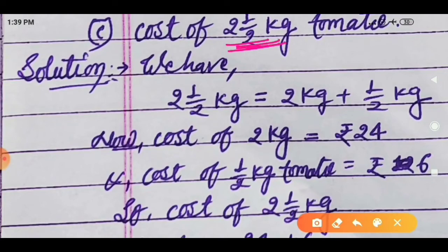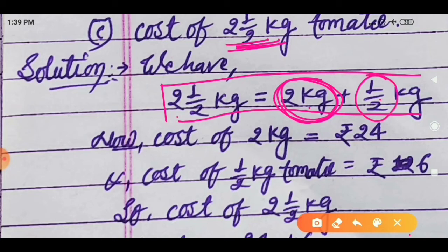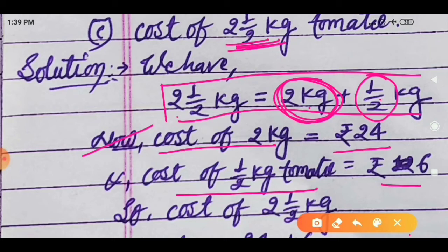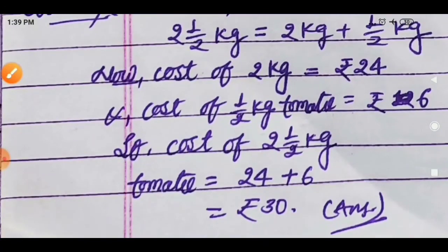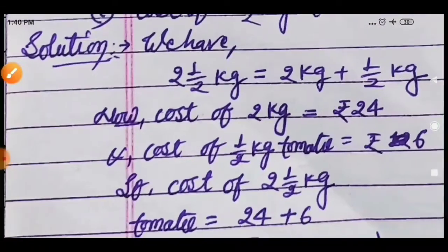Next question: find the cost of 2 whole 1 upon 2 kilograms of tomato. Since we have a mixed fraction, we can split it into 2 kilograms and half kilogram. From previous questions, cost of 2 kilograms tomato is 24 rupees and cost of half kilogram is 6 rupees. Adding these: 24 plus 6 equals 30 rupees. So the cost of 2 and a half kilograms of tomato is 30 rupees.